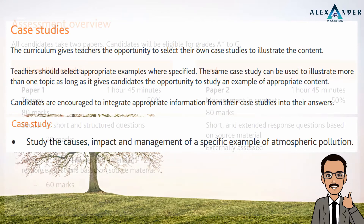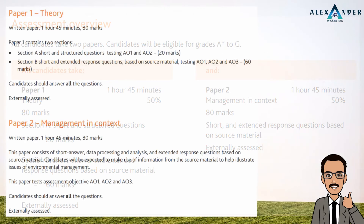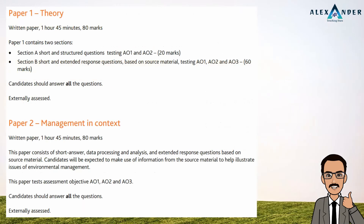You will need to take two papers on two different dates. Paper 1 is Theory and Paper 2 is Management in Context. Both papers are for a total of 80 marks each, with an exam duration of 1 hour 45 minutes per paper. You must answer all questions.